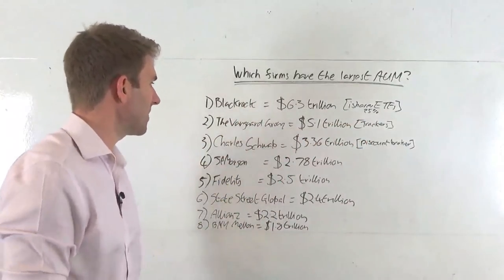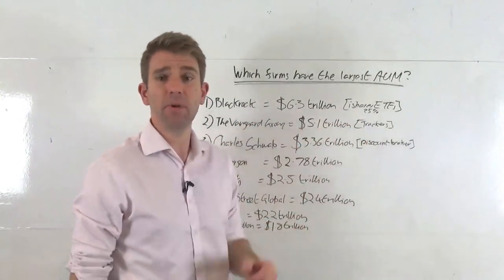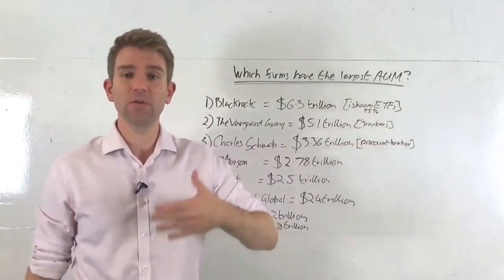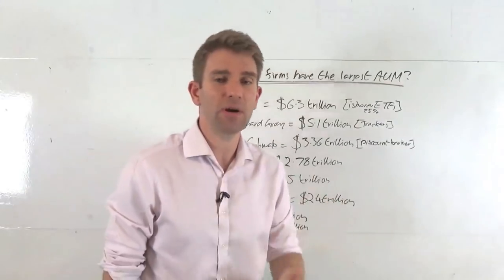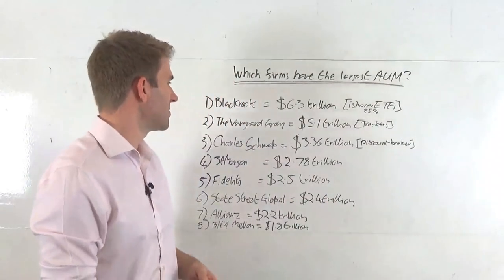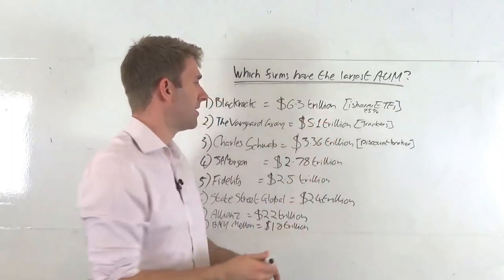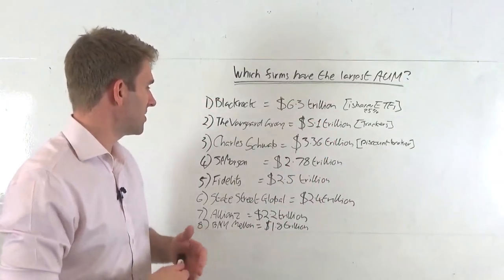BlackRock, biggest player out there by quite a big margin, actually. Then we've got the Vanguard Group, $5.1 trillion. They do a lot of trackers as well, a lot of low cost, you can track the market at a low cost type of thing. And $5.1 trillion as well, guys. I mean, that's still an impressively large number. We're talking some serious change here.